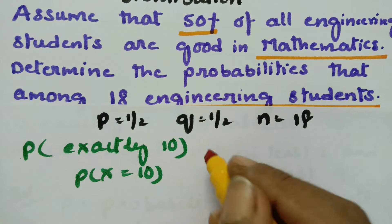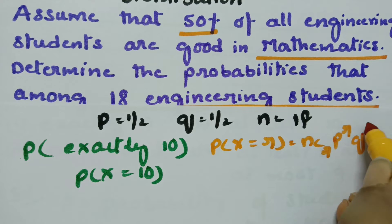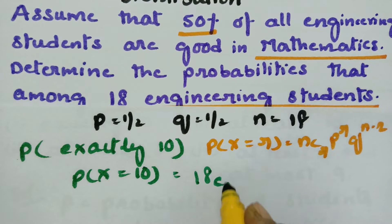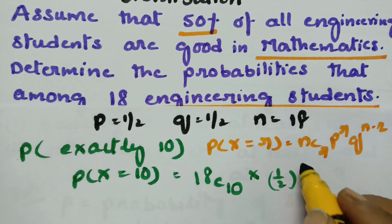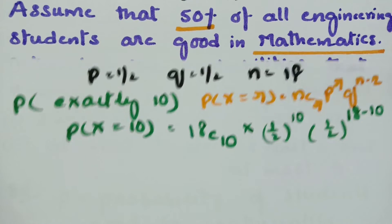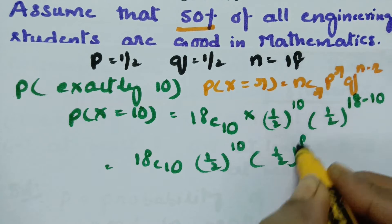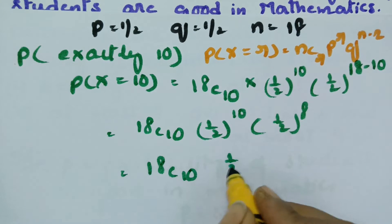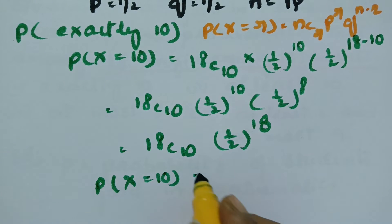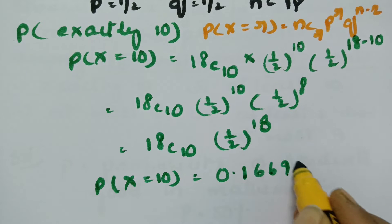According to the binomial distribution formula, P(X = R) equals NCR times P^R times Q^(N−R). Substituting our values: N is 18, so this is 18C10 times (1/2)^10 times (1/2)^(18−10), which is (1/2)^8. This becomes 18C10 times (1/2)^18. The value for exactly 10 students good in maths is 1.669235 — you can calculate 18C10 using N factorial divided by (N−R) factorial times R factorial or use your calculator.